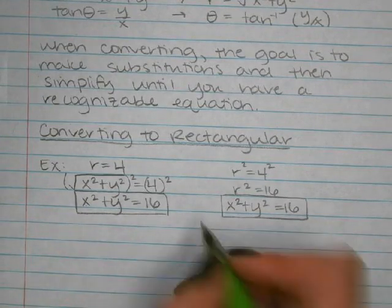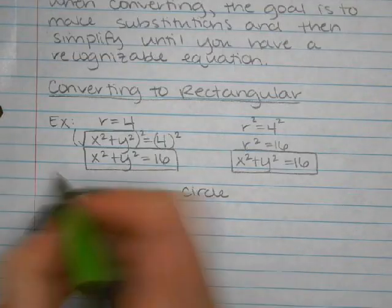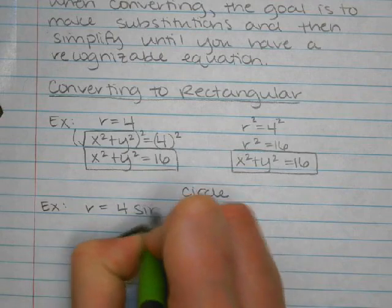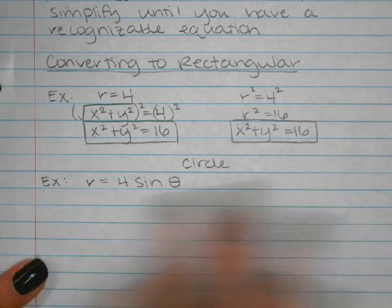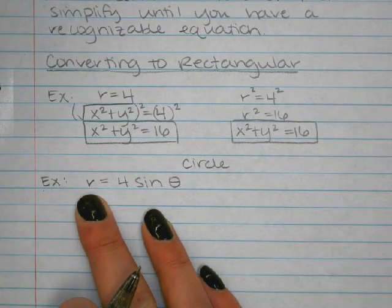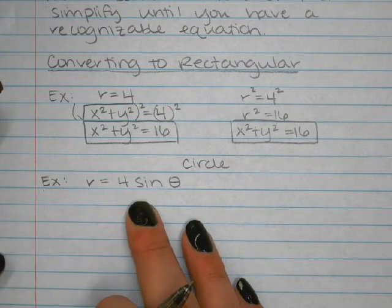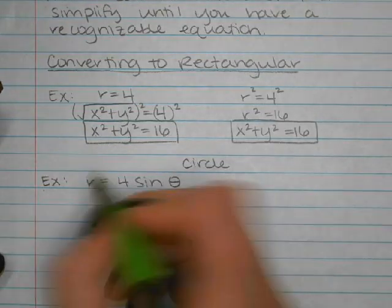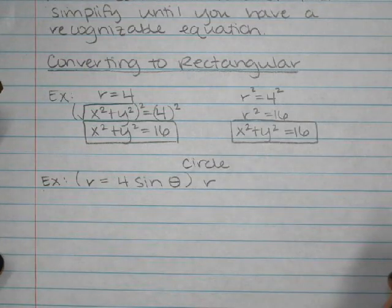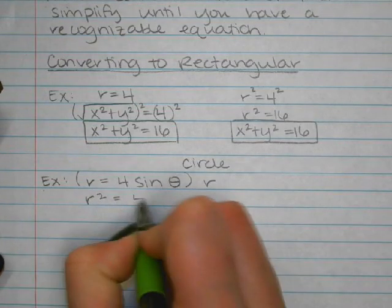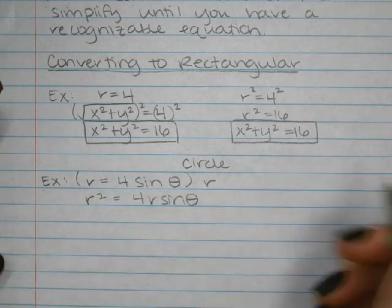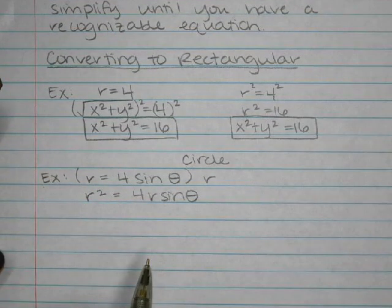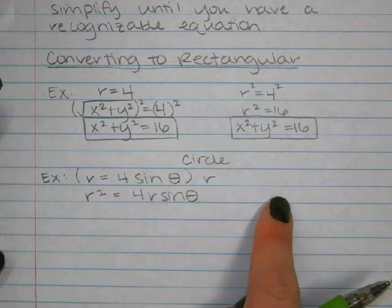This is a circle, so we've got a recognizable equation. For the next example, R = 4 sinθ. I could substitute √(x² + y²) for R, but there's no substitution for 4 sinθ alone — it has to be 4R sinθ. So I'm going to multiply the entire equation by R, giving R² = 4R sinθ. That works because we have substitutions for both R² and R sinθ.